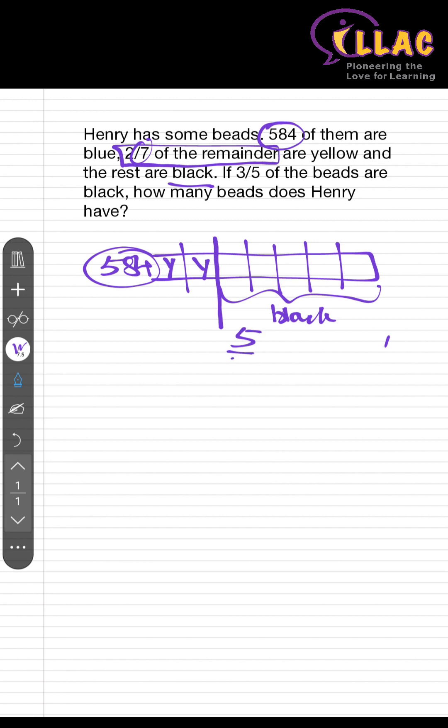Given that they are black, so they are 5 over 7 of the remainder that are black. However, the question says that 3 fifth of the beads, which means 3 fifth of the total, are supposed to be black. Which means this 5 over 7 of the remainder also means 3 over 5 of the total.